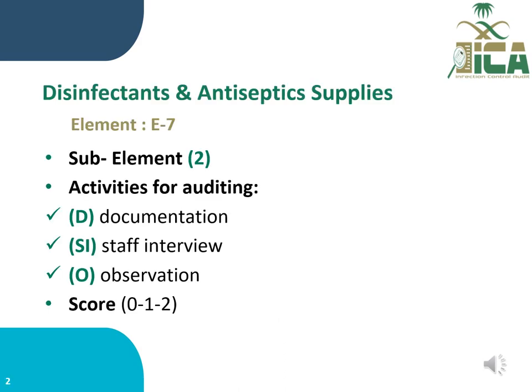Element number seven of disinfectant and antiseptic supplies consists of two sub-elements. When evaluating or auditing these sub-elements, the activities will be around document review, staff interview, and observation — represented by the letters D, SI, and O respectively. The scoring process will be 0 for not-met, 1 for partially-met, and 2 for fully-met sub-elements.